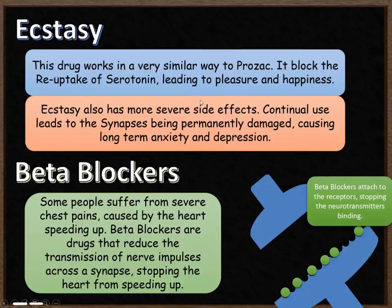Ecstasy blocks reuptake. Beta blockers attach to the receptors, stopping neurotransmitters from binding. That's the really crucial difference between them.